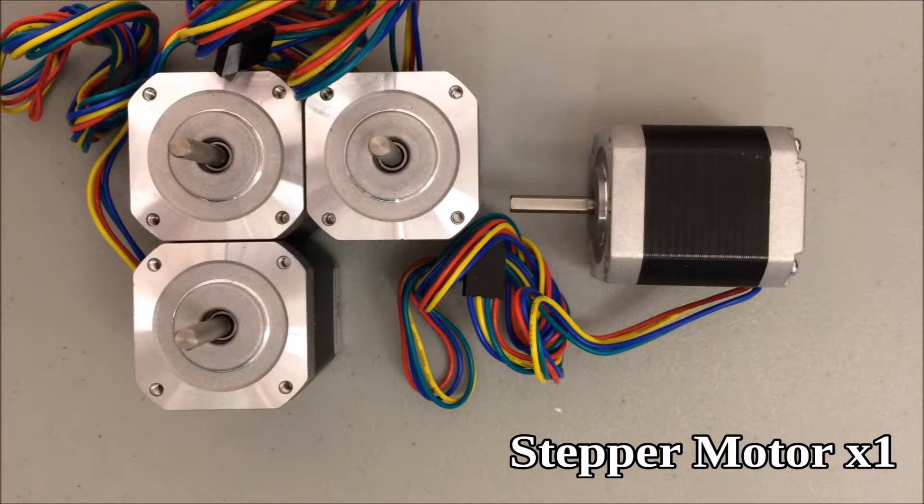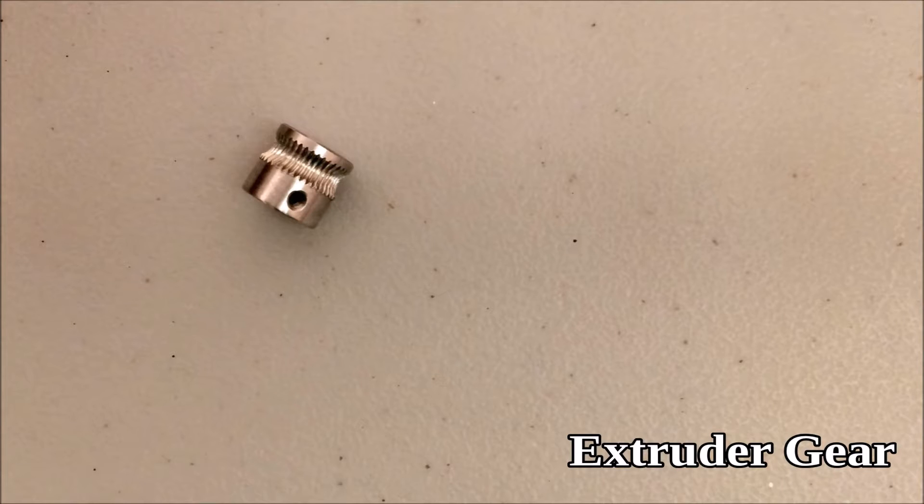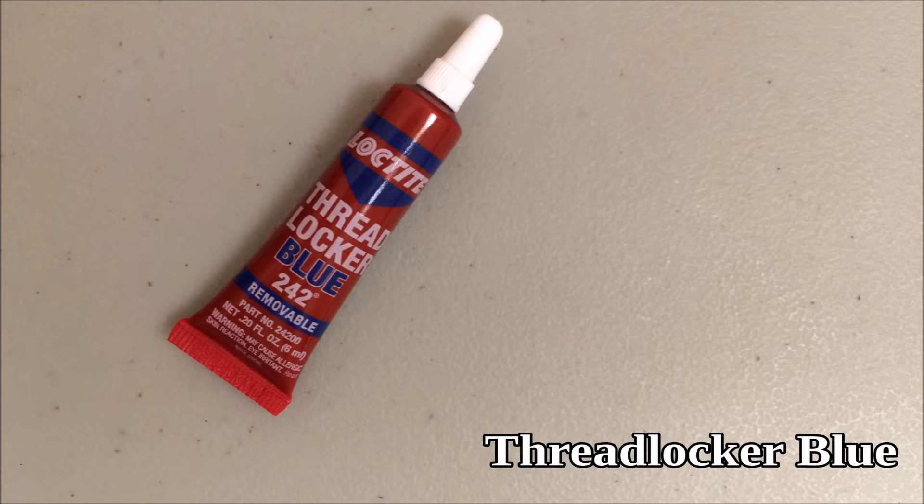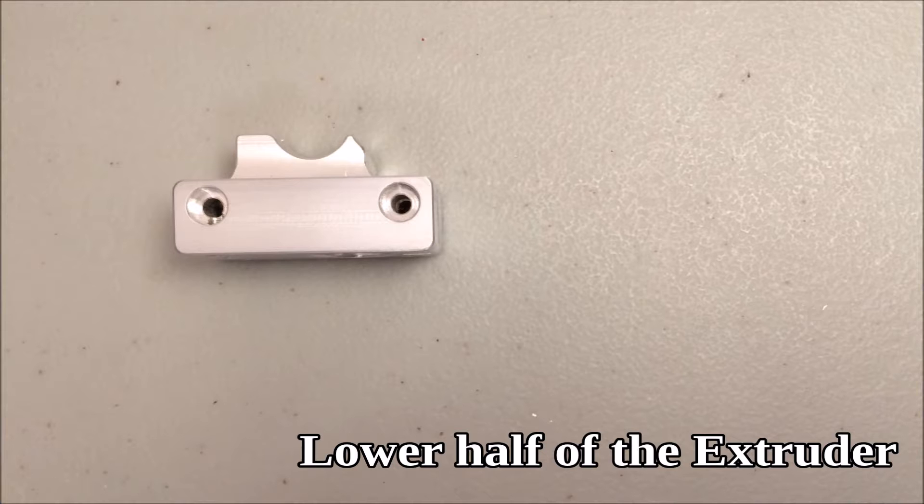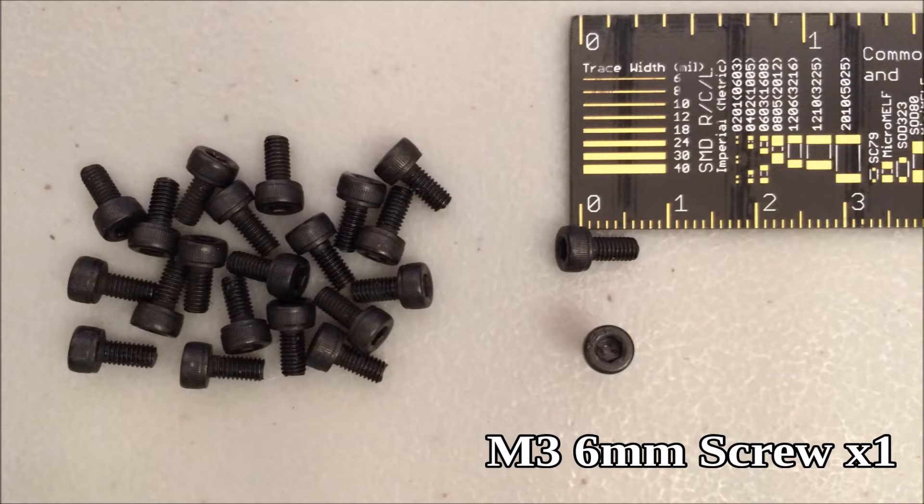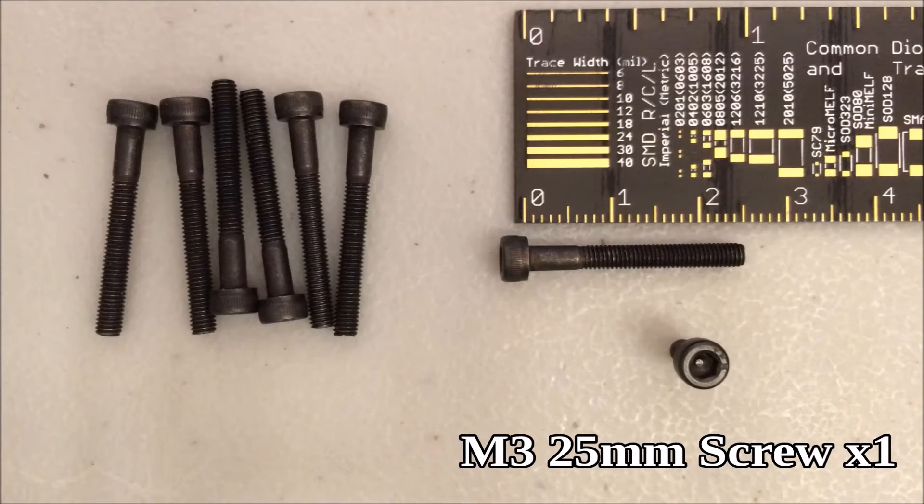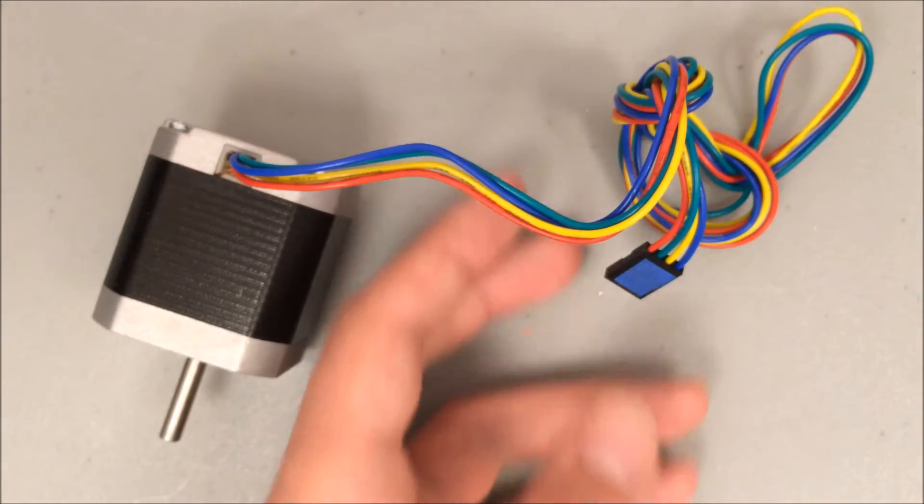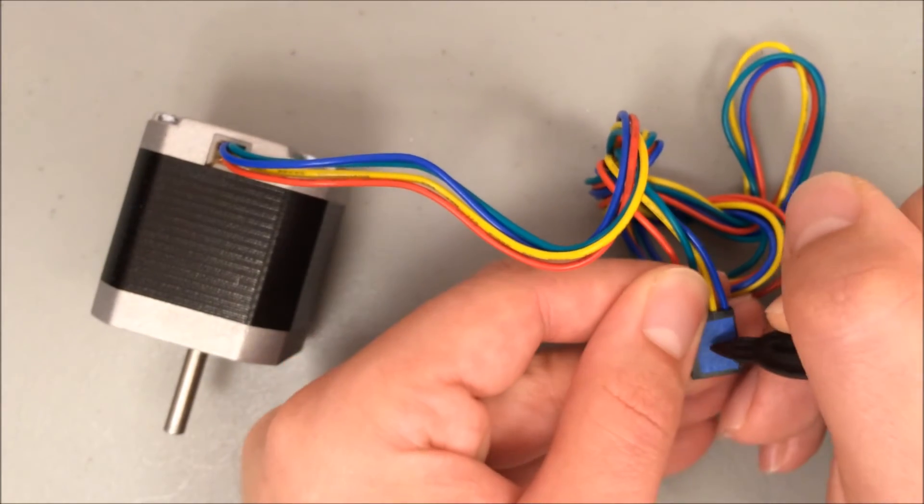You need one stepper motor, the extruder gear, one M3 set screw, thread locker blue, the bottom half of the extruder, one M3 6mm screw, and one M3 25mm screw. This last motor is the extruder motor, so mark it with the letter E.